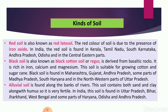Black soil is also known as black cotton soil or regur. It is mainly derived from basaltic or volcanic rocks. This soil contains iron, calcium, and magnesium and the upper layer contains a large proportion of humus and clay. Because of these nutrients and humus, this soil is very fertile. It is suitable for growing cotton and sugarcane. Black soil is found in parts of Maharashtra, Gujarat, Andhra Pradesh, Rajasthan, western Madhya Pradesh, south Haryana, and north-western Uttar Pradesh.